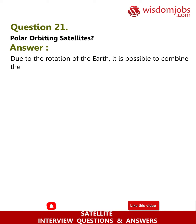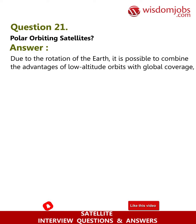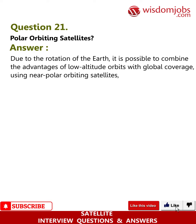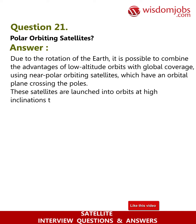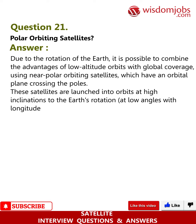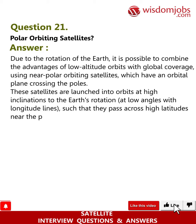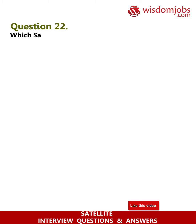Question 21: Polar orbiting satellites. Due to the rotation of the earth, it is possible to combine the advantages of low altitude orbits with global coverage using near-polar orbiting satellites, which have an orbital plane crossing the poles. These satellites are launched into orbits at high inclinations to the earth's rotation at low angles with longitude lines, such that they pass across high latitudes near the poles.